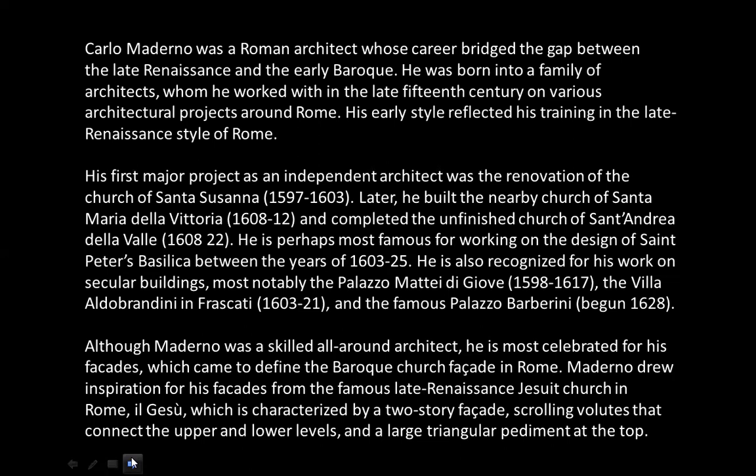At the beginning of the 17th century, he's perhaps most famous for working on the design of St. Peter's Basilica between the years 1603 and 1625. He's also recognized for his work on secular buildings, most notably the Palazzo Mattei di Giove, the Villa Aldobrandini in Frascati, and the famous Palazzo Barberini, begun in 1628. Although Maderno was a skilled all-around architect, he is most celebrated for his facades, which came to define the Baroque church facade in Rome.